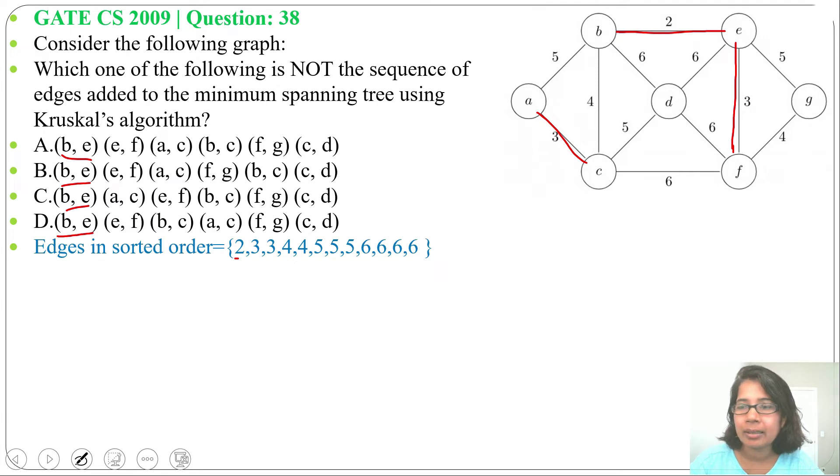So in 2nd and 3rd position AC and EF are possible. Here EF, AC correct. EF, AC correct. AC, EF correct. Here EF, BC. BC weight is 4 and after BC it includes AC.